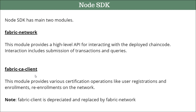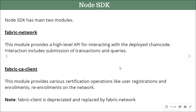Whenever you interact with your network from outside, the very first thing you need is a user which has access from the outside. That user has to be enrolled and registered, which is done with the help of fabric-ca-client. Then that user uses the fabric-network module to interact with your chaincode. So at a high level, these are the two main modules in the Node.js SDK.